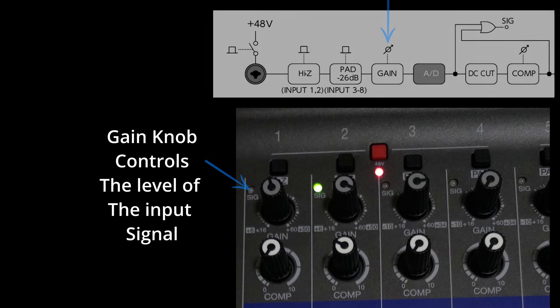Let's take a look at the function of the gain knob. The gain knob controls the input sensitivity, amplifying the signal from your microphone, instrument, or audio source to an optimal level for recording or mixing. Setting the correct gain ensures that your audio is neither too quiet nor too loud, capturing the nuances of the performance.